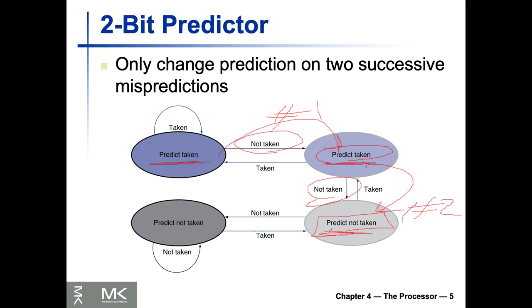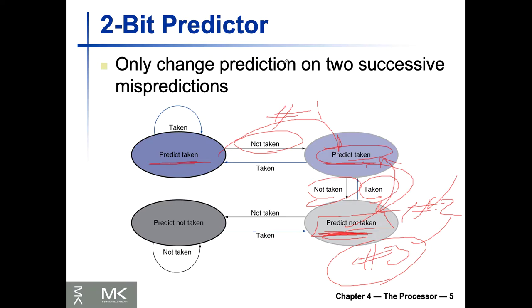If at this point we are in 'predict not taken' and it turns out we have to take it, we arrive at 'weakly taken'. If the third one is also false, then the last two were still two consecutive mispredictions. These are all optimizations you can define as a designer or computer architect — using more bits allows you to define more sophisticated cases for branches.